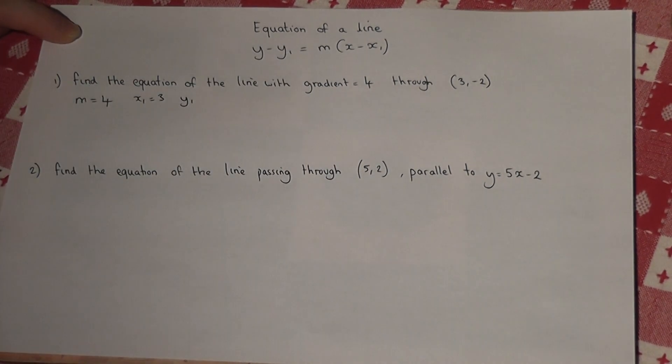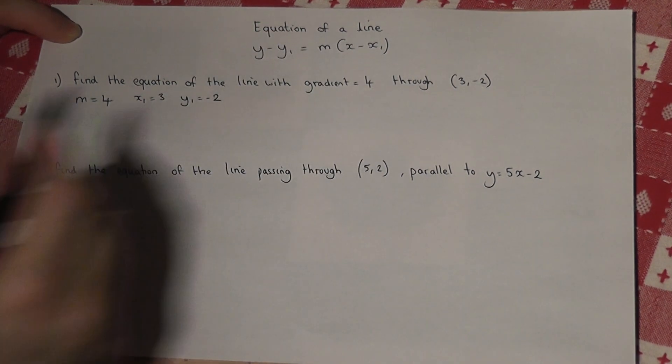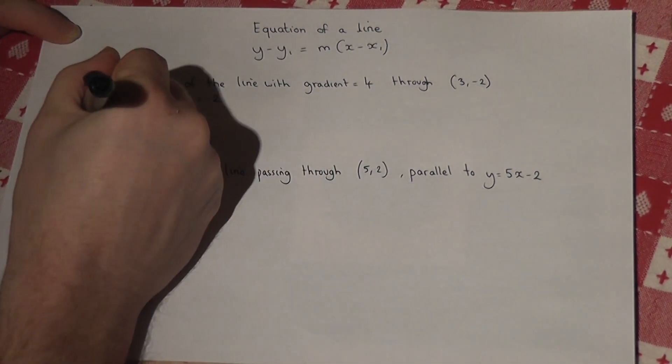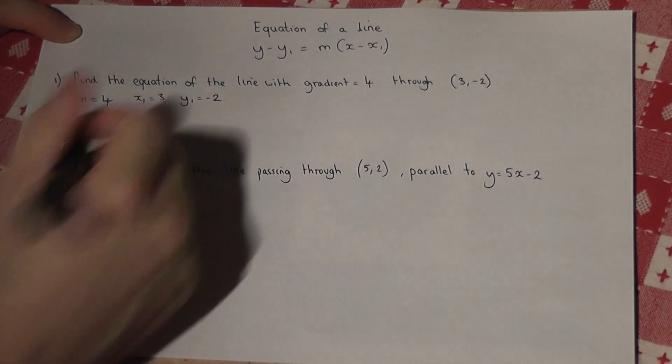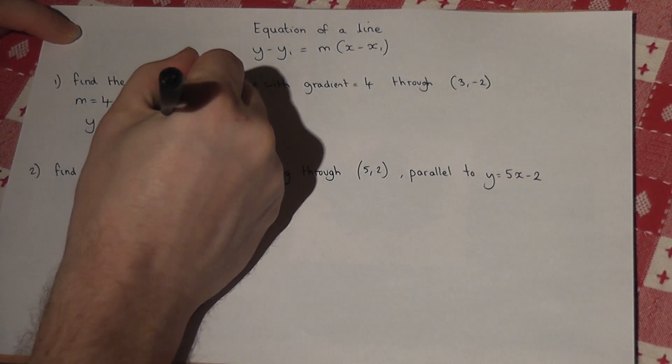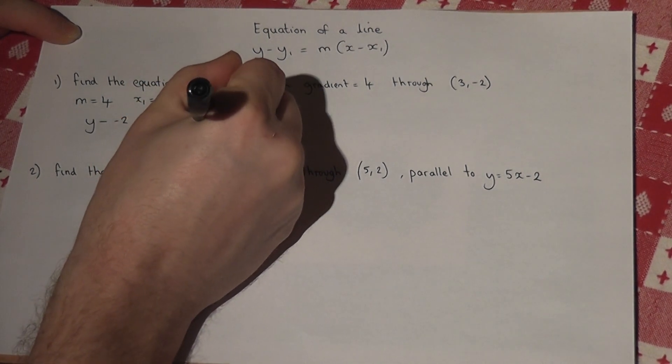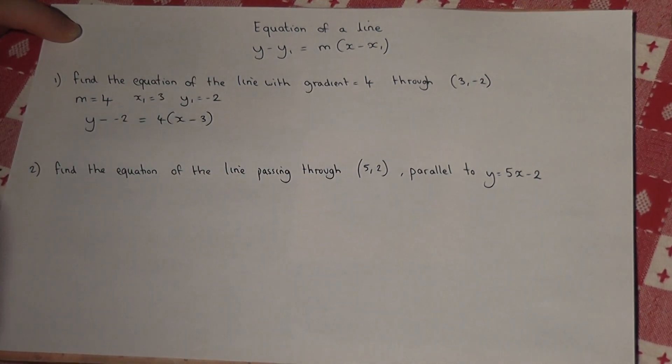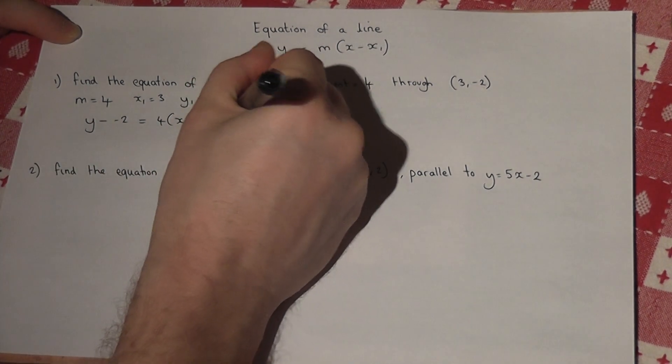We substitute these values into the equation: y minus y1, which is -2, equals m, which is 4, times (x minus x1). Now y minus -2 becomes y plus 2, and expanding this gives 4x take away 12.